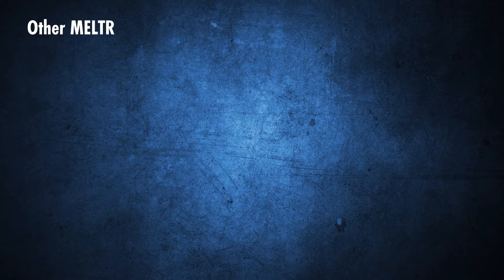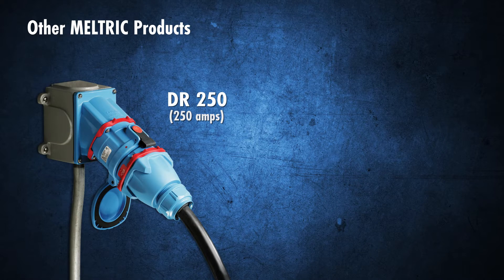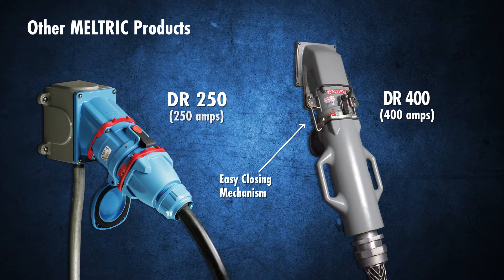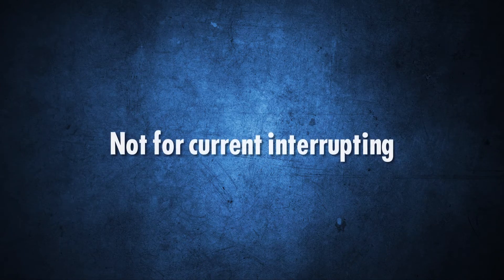For higher amperages, Meltrix offers the DR250 amp and the DR400 amp models. These devices utilize similar product technology as our switch rated line, but they are not for current interrupting.